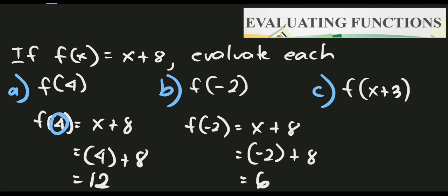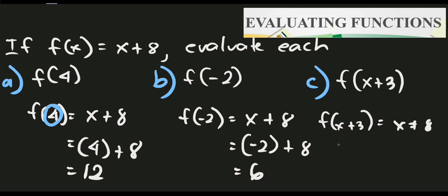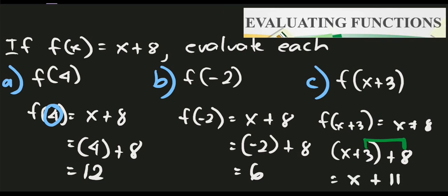We are also allowed to evaluate a function with another expression as input. For letter C, we have f of x plus 3, so the input is x plus 3. Same procedure — substitute that expression for x. So f of x plus 3 equals x plus 8, replacing x with x plus 3 gives us x plus 3 plus 8. Combining like terms, 3 and 8, we get x plus 11. That is our final answer.